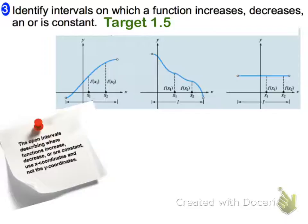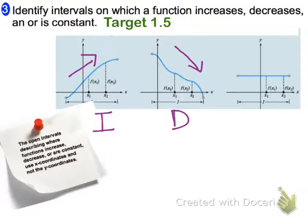It's important to know that we read a graph just like we read a book, from left to right. So if the graph is going uphill from left to right, it's increasing. If it's going downhill from left to right, it's decreasing. And if it stays the same from left to right, it is constant.